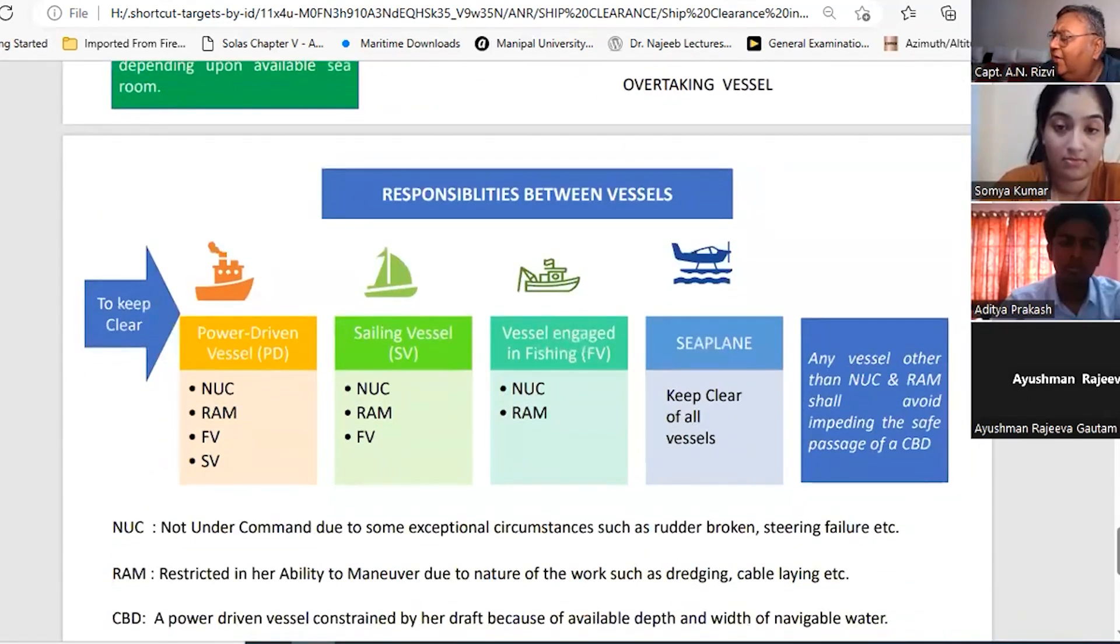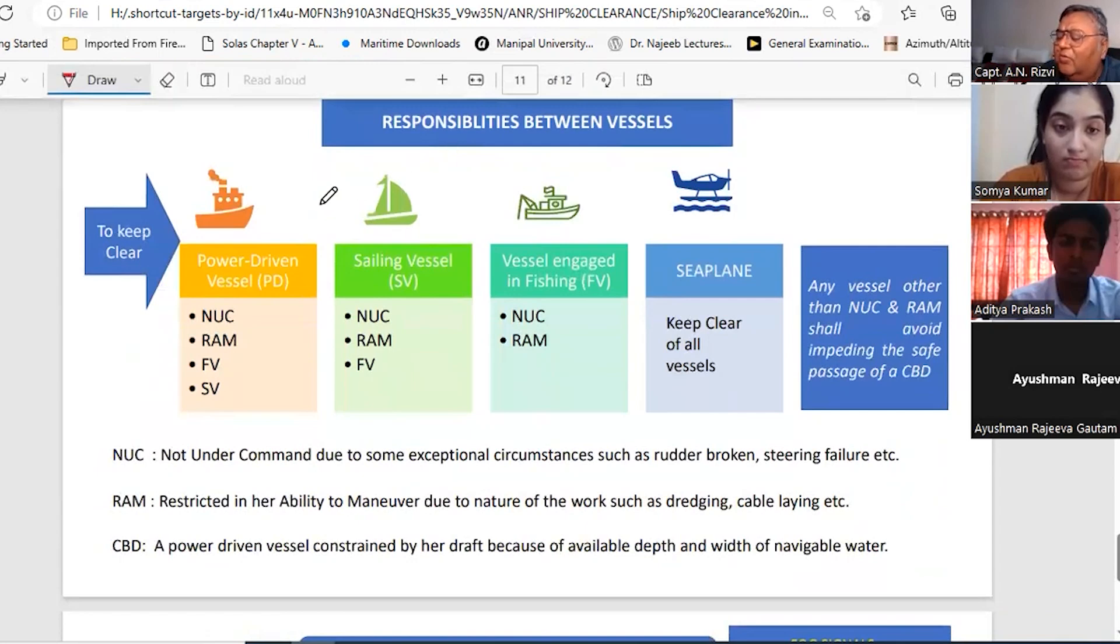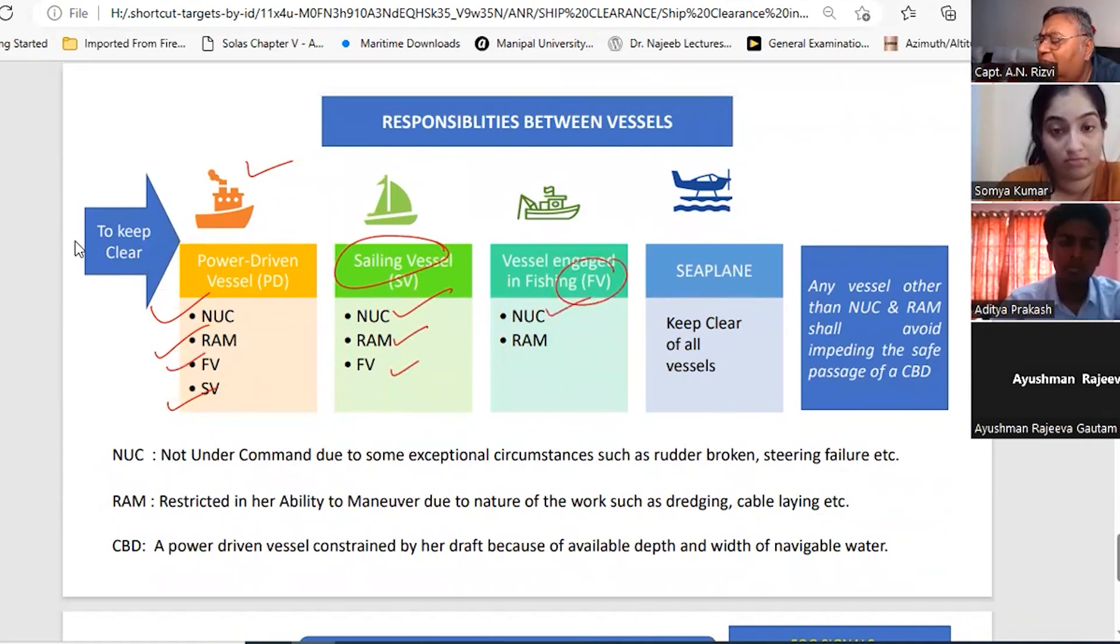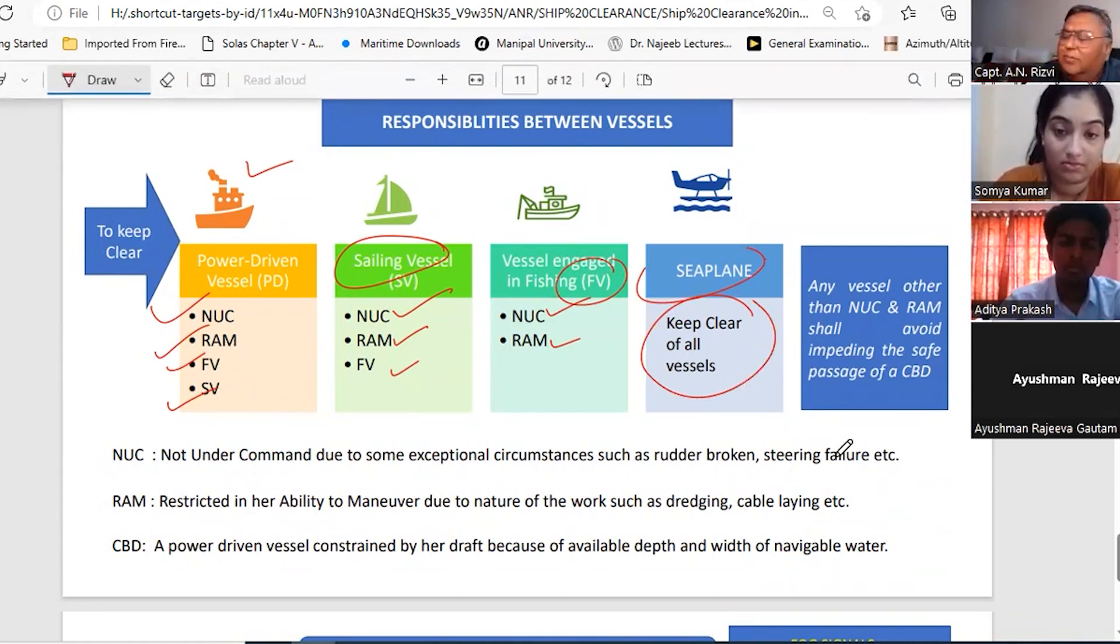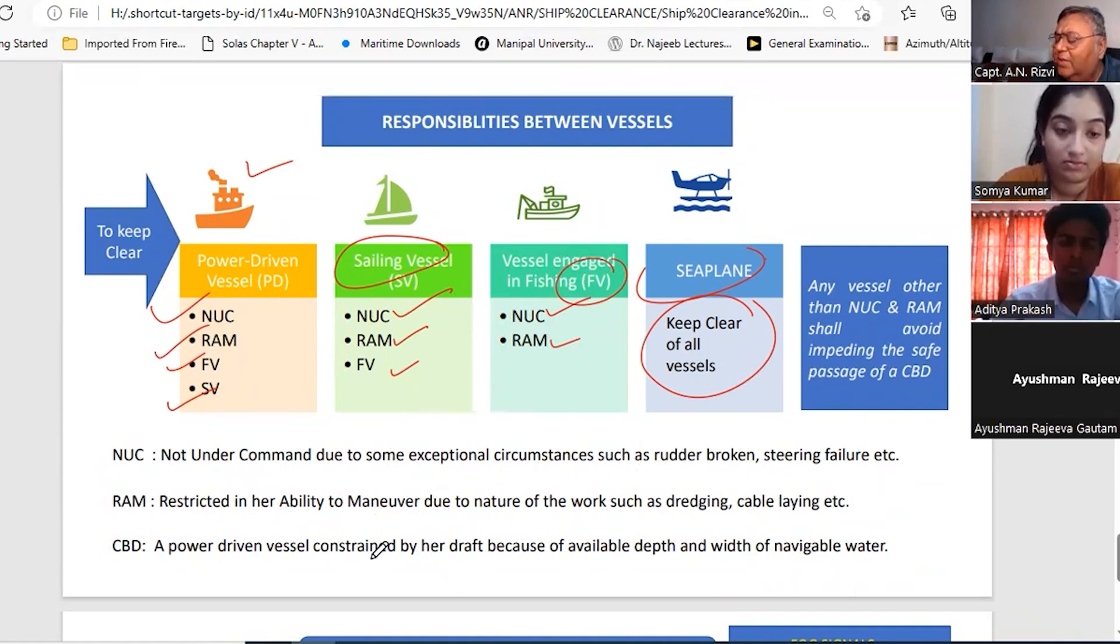If you are having different types of vessels - say one vessel is power-driven, other vessel is NUC, RAM, fishing vessel, sailing vessel - then you are supposed to keep clear. If you are a sailing vessel, then you are supposed to keep clear of NUC, RAM, and fishing vessel. If you are fishing vessel, then you are supposed to keep clear of NUC and RAM. If you are seaplane, that means you are supposed to keep clear of all vessels. By the way, NUC means not under command due to some exceptional circumstances such as rudder broken, steering failure, etc. RAM is because of the nature of the work like dredger, minesweeper, etc. Then the CBD is a vessel constrained by her draft because of available depth and width of navigable water.